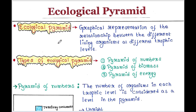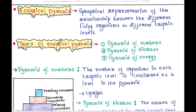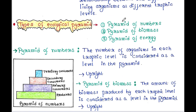There are different types of ecological pyramids such as pyramid of numbers, pyramid of biomass, and pyramid of energy. We will talk about them one by one.